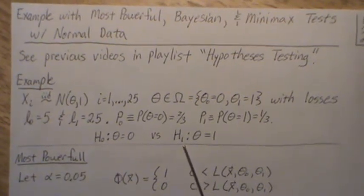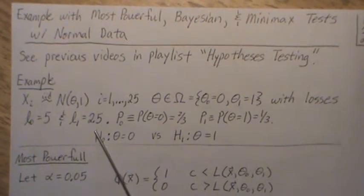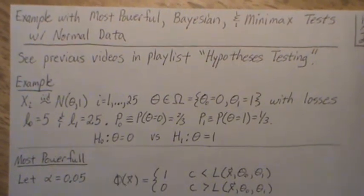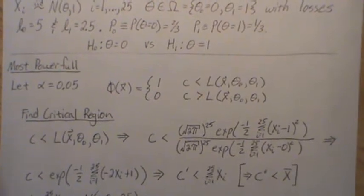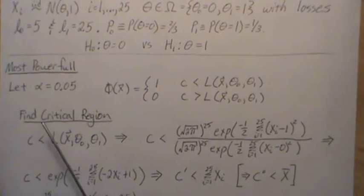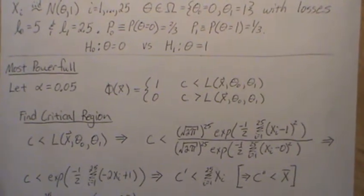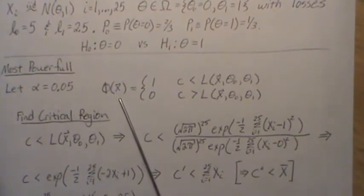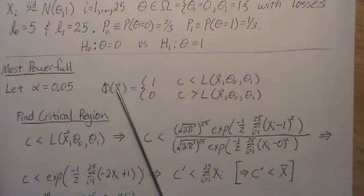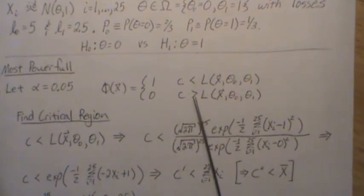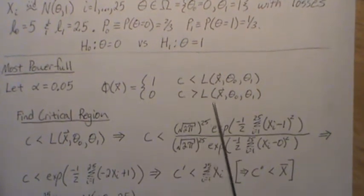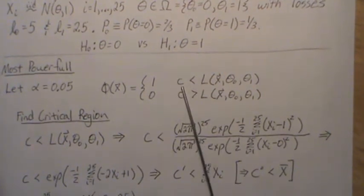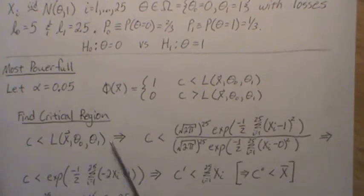L1 means the alternative is true but our test indicates the null hypothesis is true, with a loss of 2.5. To conduct the most powerful test — simple versus simple using the Neyman-Pearson lemma — we let alpha be 0.05. The test function phi of X is 1 or 0 if the likelihood ratio is greater than or less than some constant C, and C is determined accordingly.